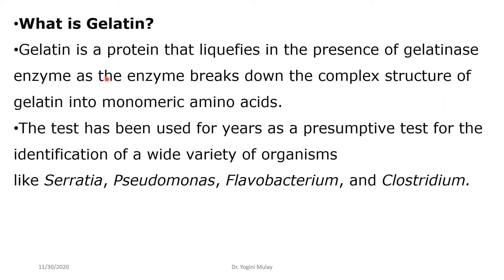Gelatin is a protein that liquefies in the presence of gelatinase enzyme, as the enzyme breaks down the complex structure of gelatin into monomeric amino acids. Gelatin is a protein, and protein is a polymer of amino acids, so when gelatinase acts on gelatin it breaks it down into monomeric amino acids. This test has been used for years as a presumptive test for identification of organisms like Serratia, Pseudomonas, Flavobacterium, and Clostridium.